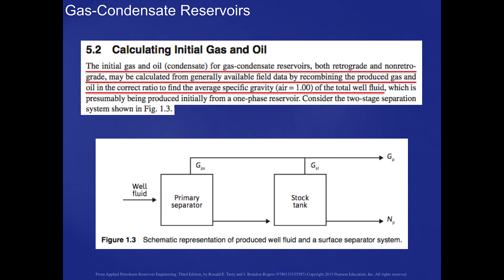I'm going to start with this two-stage separator system that's shown in this diagram. We'll bring the condensate fluid up through our well into our first primary separator. The gas from that will join with the stock tank gas.